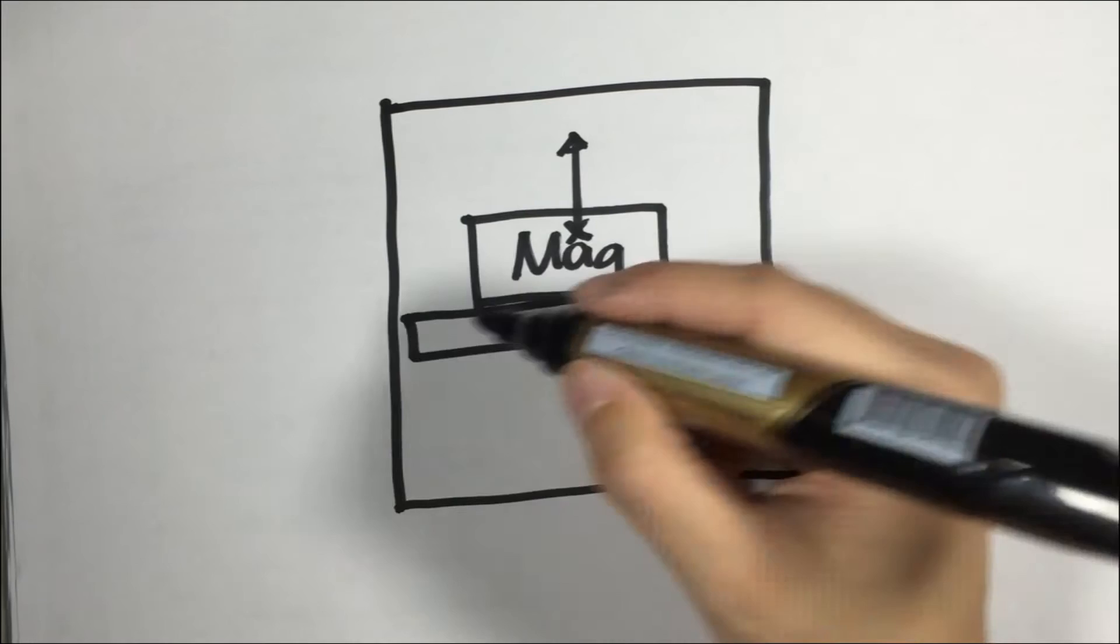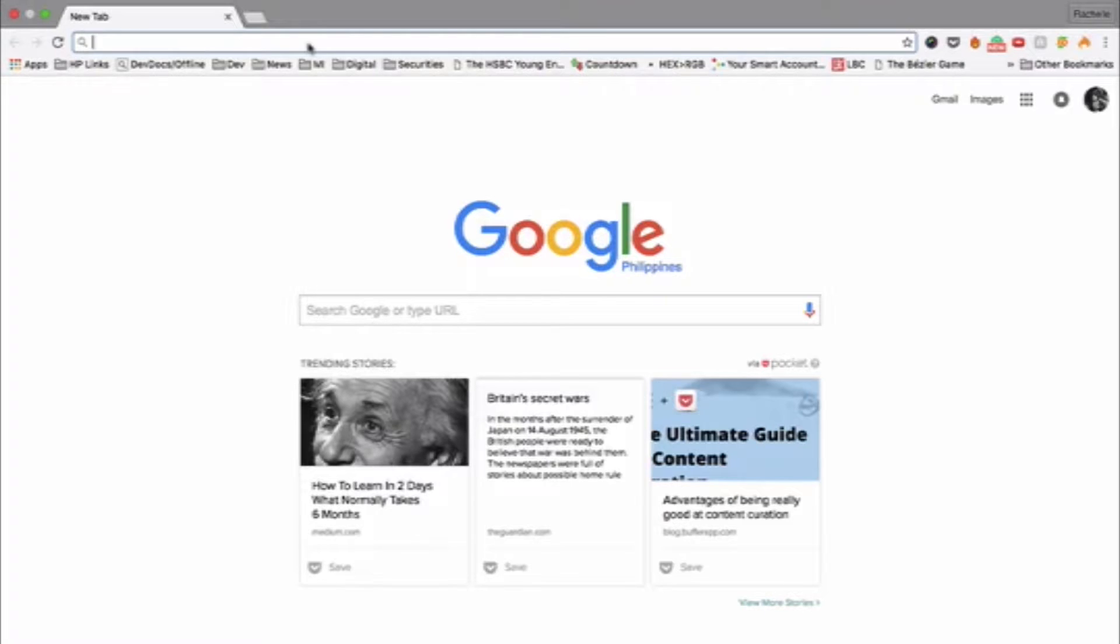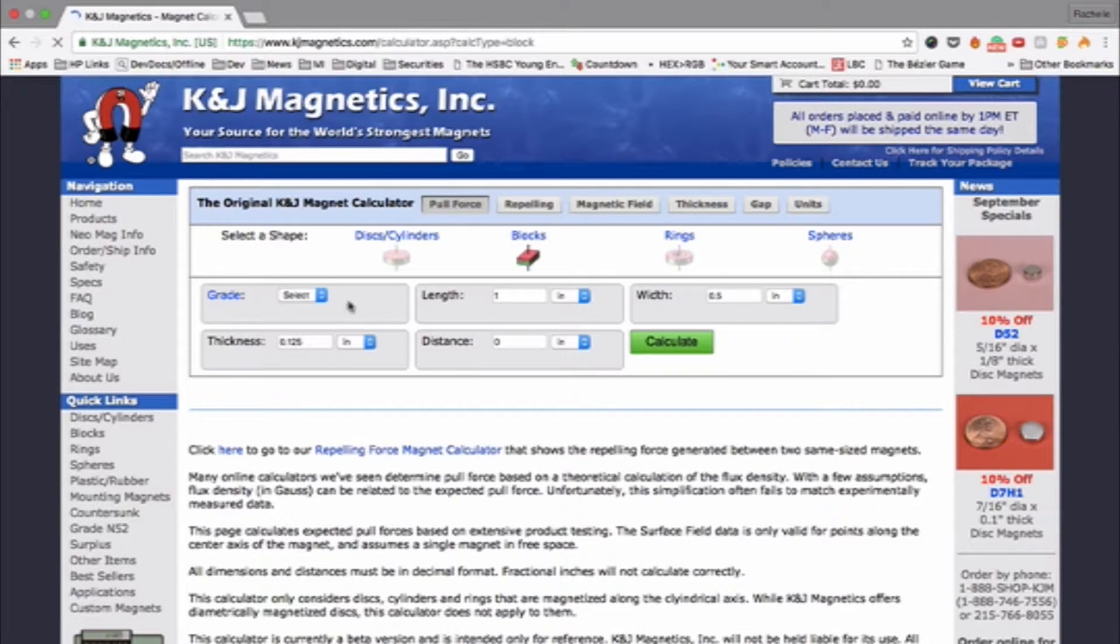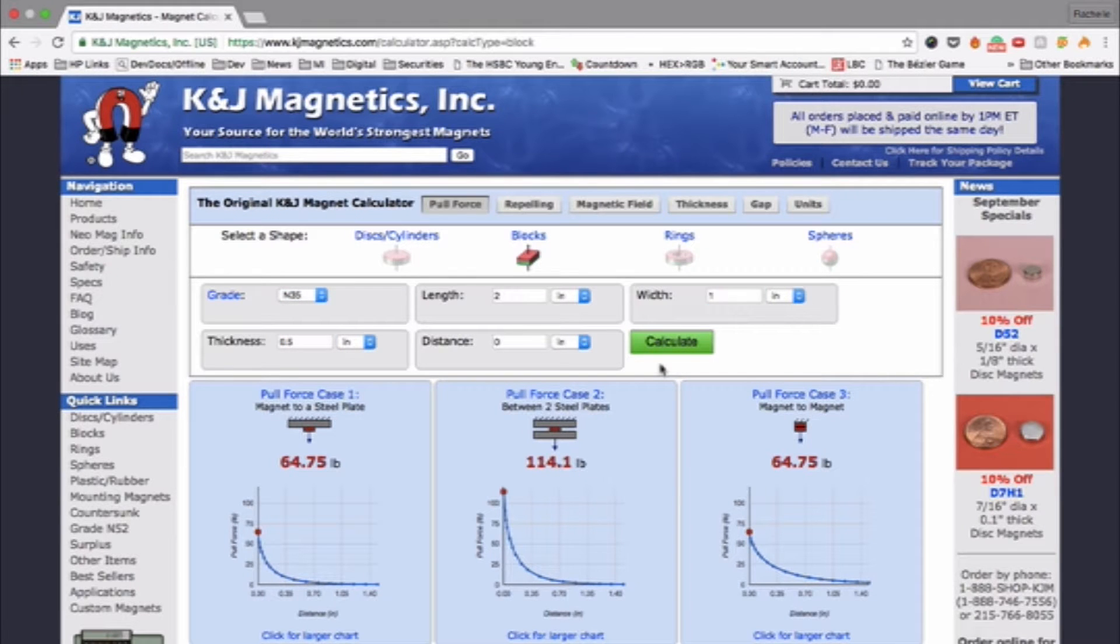The magnet is stuck to a steel plate or to another magnet. You can check it using the calculator by KJ Magnetics. I've posted the link below. The pull force might be 64 pounds using this calculator, but in reality, it's not.